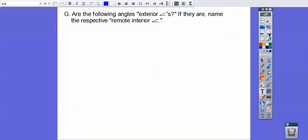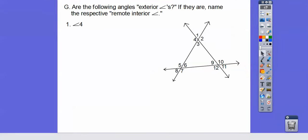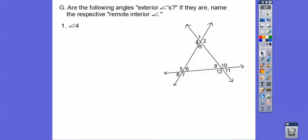So let's go ahead and get started here. So are the following angles exterior angles? And if they are, name their respective remote interior angles. So here's our figure right there. So we got lots of angles there. So is angle 4 an exterior angle? Does angle 4 form a linear pair with an inside angle? Yeah, you see that straight line? So angle 4, yes, it is an exterior angle.